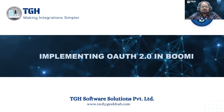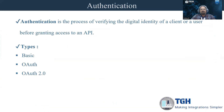OAuth 2.0 is an authentication method that is available while consuming an API using HTTP client connector. Before jumping into OAuth 2.0, let us first understand what is authentication and what are the different types available in Boomi. Authentication is the process of verifying the digital identity of a client or a user before granting access to an API. The authentication types we have are basic, OAuth, and OAuth 2.0.